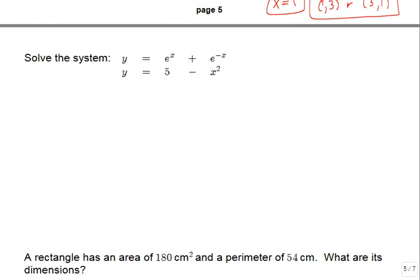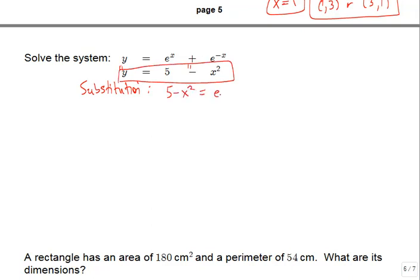The next example: solve the system y equals e to the x plus e to the negative x and y equals 5 minus x squared. Since each equation is set equal to y, we can use substitution—the two right-hand sides must be equal to each other. Replacing the y on top with 5 minus x squared gives us 5 minus x squared equals e to the x plus e to the negative x.